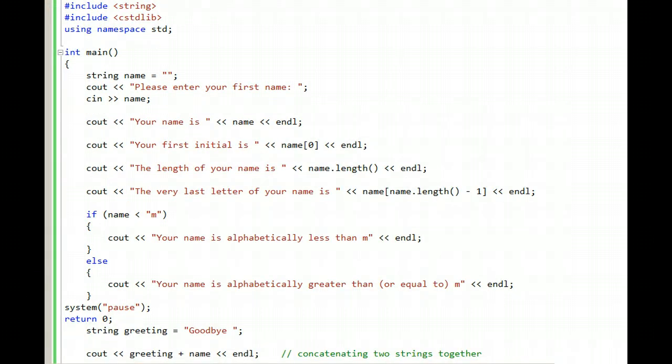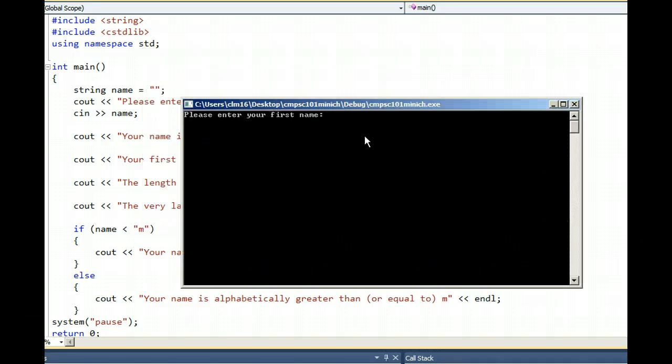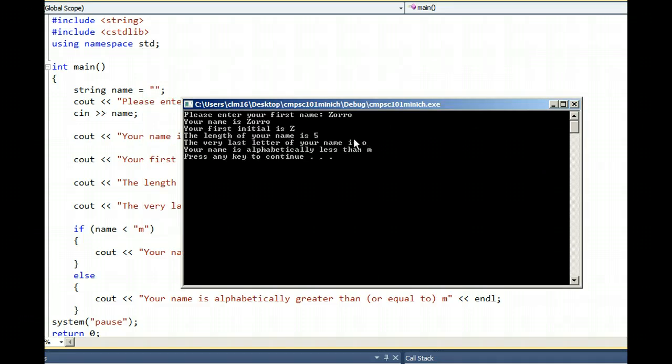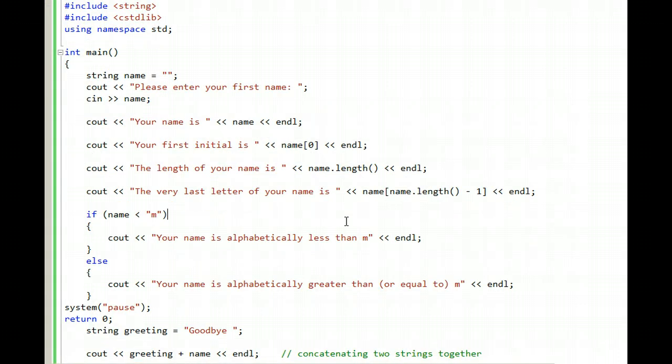It's interesting, though, if I run the program and type a capital Z for Zorro, it says that your name is alphabetically less than M when Z is not alphabetically less than M. It's actually greater than M. Because strings are compared in a case-sensitive way, all uppercase letters A through Z are considered to be less than all lowercase letters.